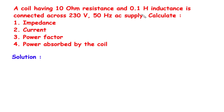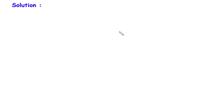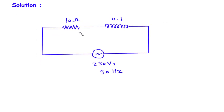A coil having 10 Ohm resistance and 0.1 Henry inductance is connected across a 230V 50Hz AC supply. We need to calculate: impedance, current, power factor, and power absorbed by the coil. The resistance, inductance, voltage, and frequency values are given. We will draw the circuit where resistance and inductance are connected in series with the AC supply.